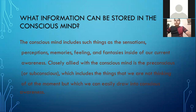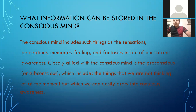What information can be stored in the conscious mind? The conscious mind includes things such as sensations, perceptions, memories, feelings, and fantasies inside of our current awareness. Closely allied with the conscious mind is the pre-conscious or subconscious mind, which includes the things that we are not thinking of at the moment but which we can easily draw into conscious awareness — for example, when we are studying and something comes into our mind and we get drawn to it.